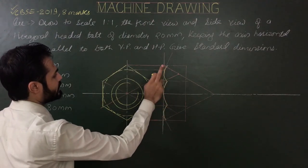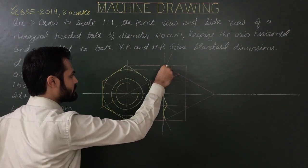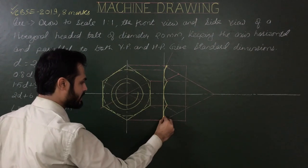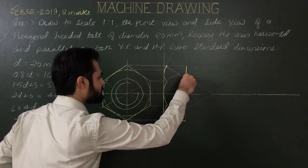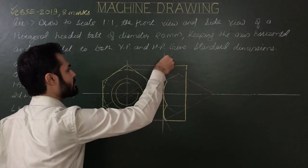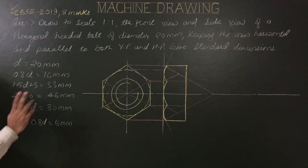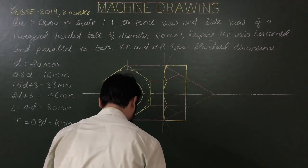Show the chamfered faces — these are all visible edges. Up to this point, the construction is similar to the hexagonal nut. The only difference is that the head thickness is 0.8D, whereas the nut thickness was D.